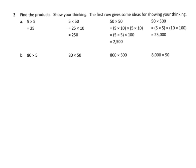All right, so we're going to find the products. Show your thinking. The first row gives some ideas. So in 80 times 5, we're going to think of this as 8 times 5 times 10. So 8 times 5 is 40, times 10 gives us 400.